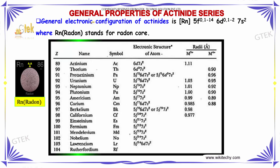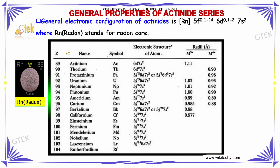Now let's look into the general properties of the actinide series. The electronic configuration of actinides is [Rn] 5F⁰⁻¹⁴, 6D⁰⁻², 7S². Rn stands for radon core. You are able to see the D subshell values going 1, 2, 3, 5, 6, 7, 8, and so on.